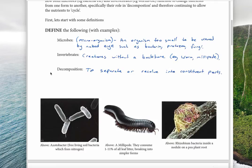First, we should start by defining these three things. Microbes are microorganisms—they're organisms that are too small to be viewed with the naked eye, such as bacteria, protozoa, or fungi.